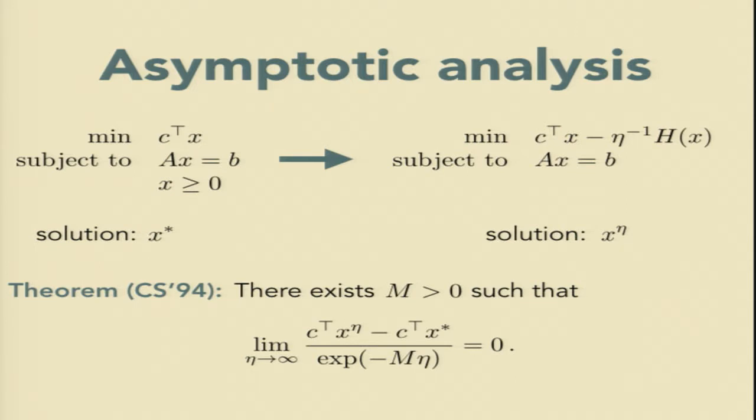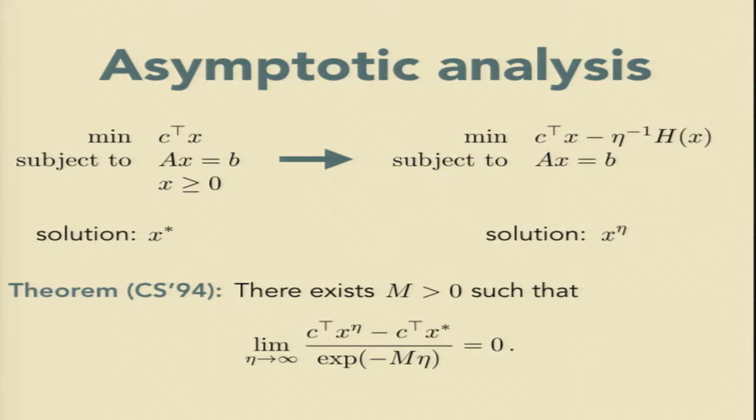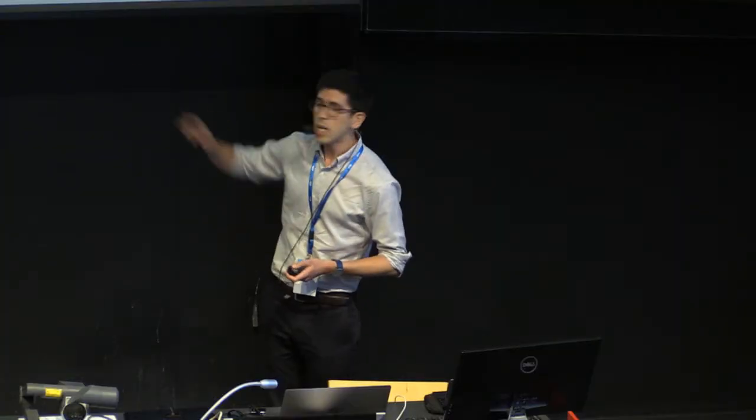And so if you just read this as a top-line result, this is the sort of cartoon that you might have in your head, right? We have this nice, fast convergence to zero. This means that I can choose eta only moderately big, and I should still get a good approximation to my original program. But I put this in quotes because this is not what Cominetti and San Martin say.